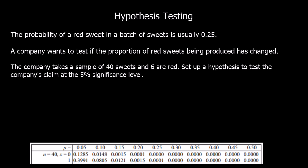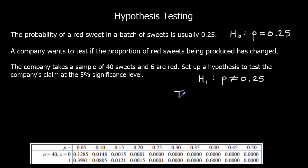Here's our second question. The probability of a red sweet is usually 0.25, so our null hypothesis is that the probability equals 0.25. The company wants to test if the proportion of red sweets has changed, so this is a two-tail test and our alternative hypothesis is that the probability is not equal to 0.25. That means we're going to look at extreme values on both sides, splitting the 5% into 2.5% of the lowest values and 2.5% of the highest values.